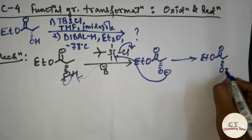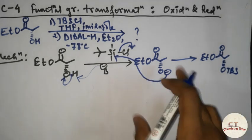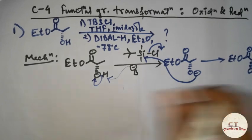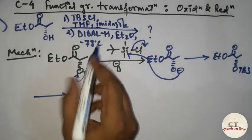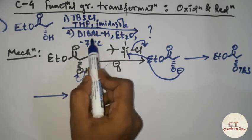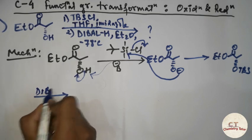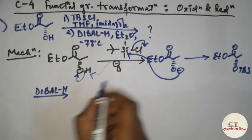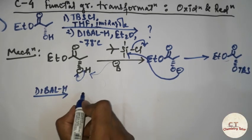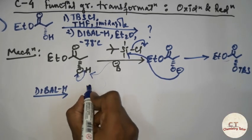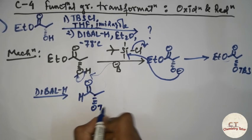Thus it will give the product — I'll write in short: TBS. So this will be the first product. Then let's go to the next step. DIBAL-H — what is the function of DIBAL-H? It will convert the ester group into an aldehyde. So this will be the final product of this reaction.